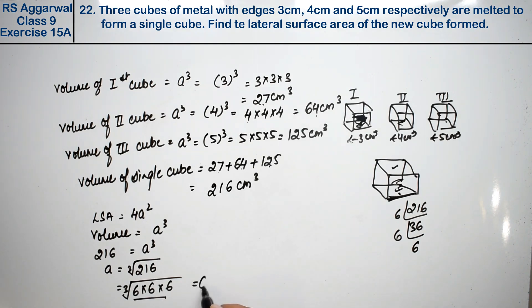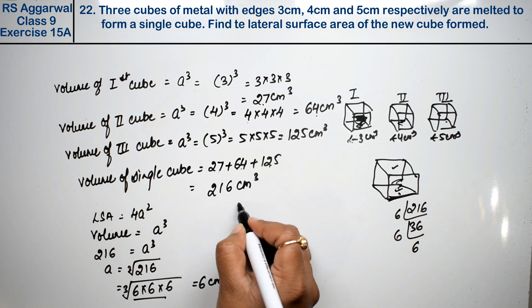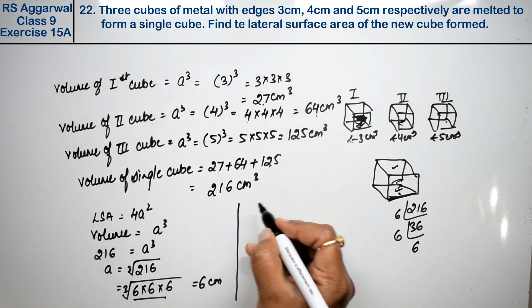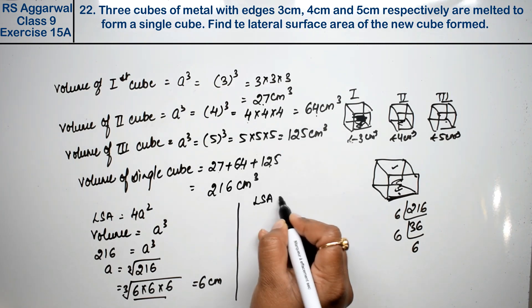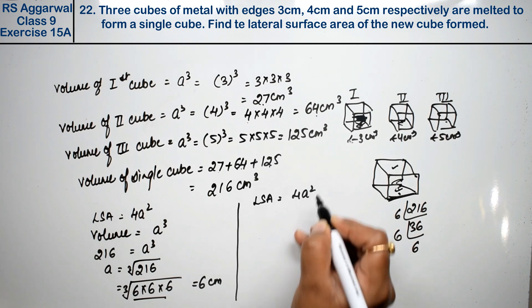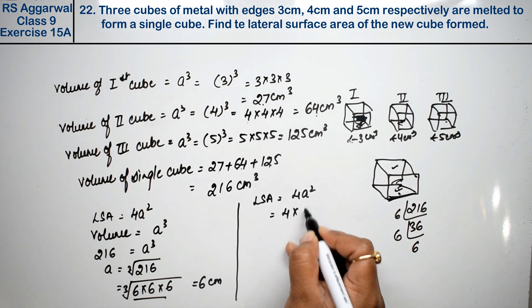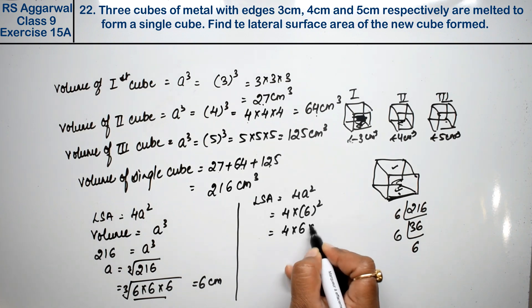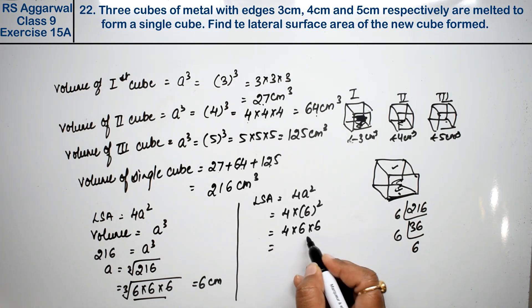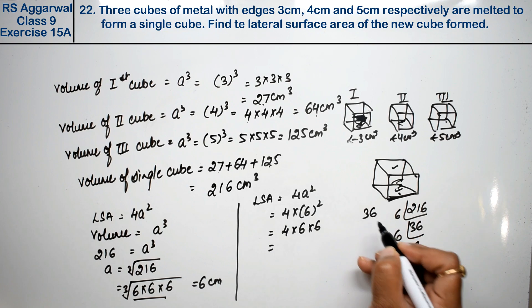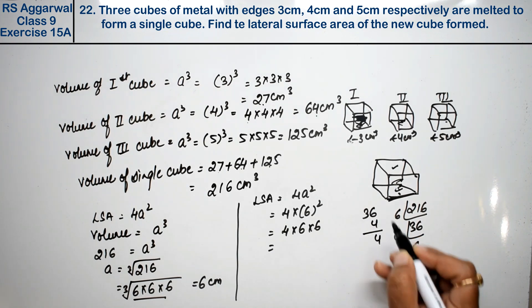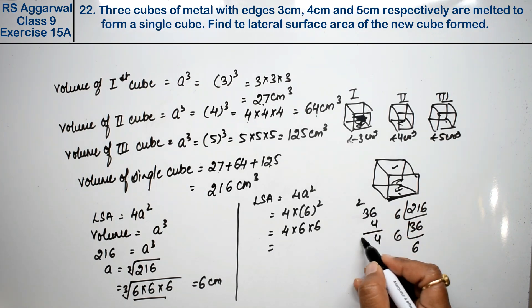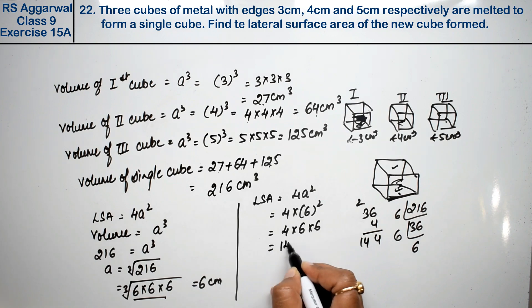Now let's find LSA. 4a square, that means 4 × 6 whole square, that means 4 × 6 × 6. 36 × 4 equals 144 cm square. That's the answer.